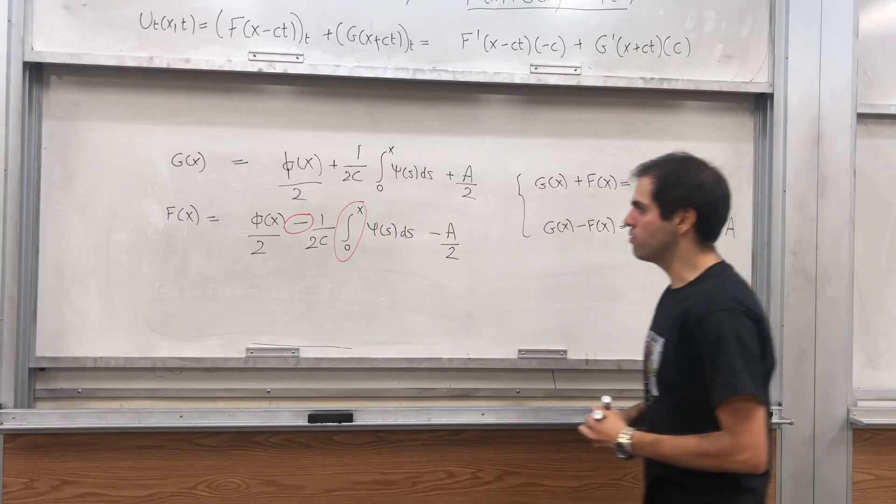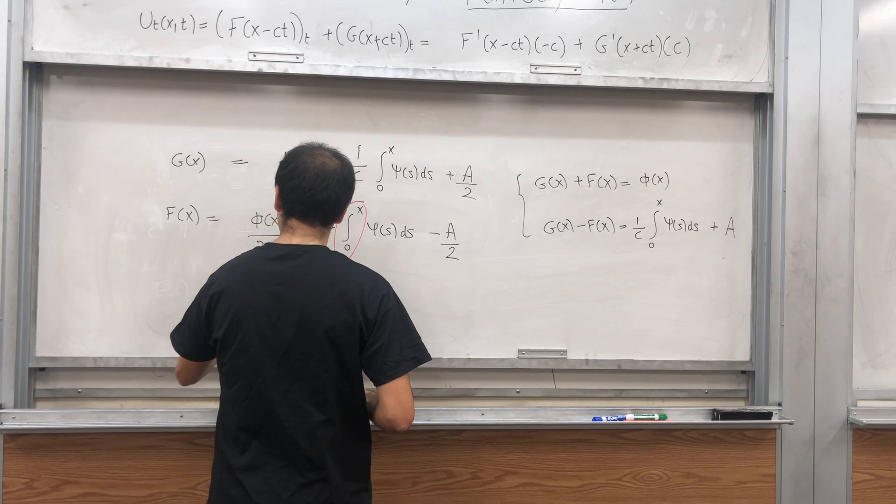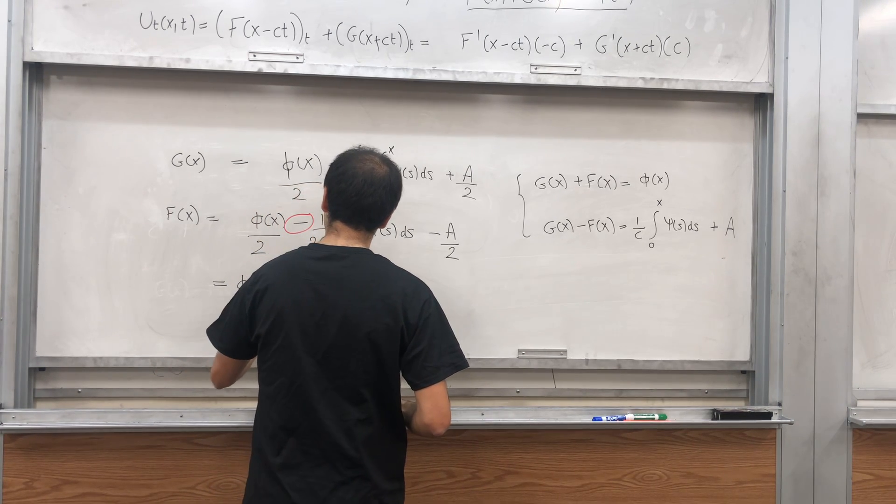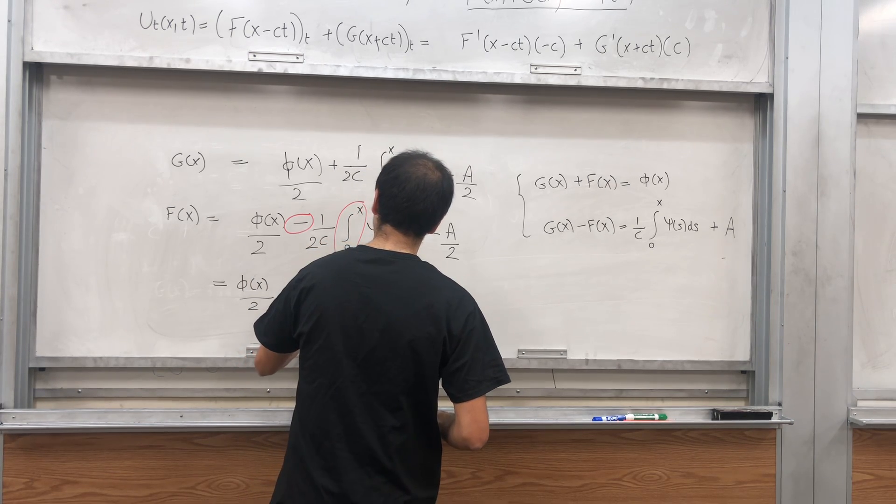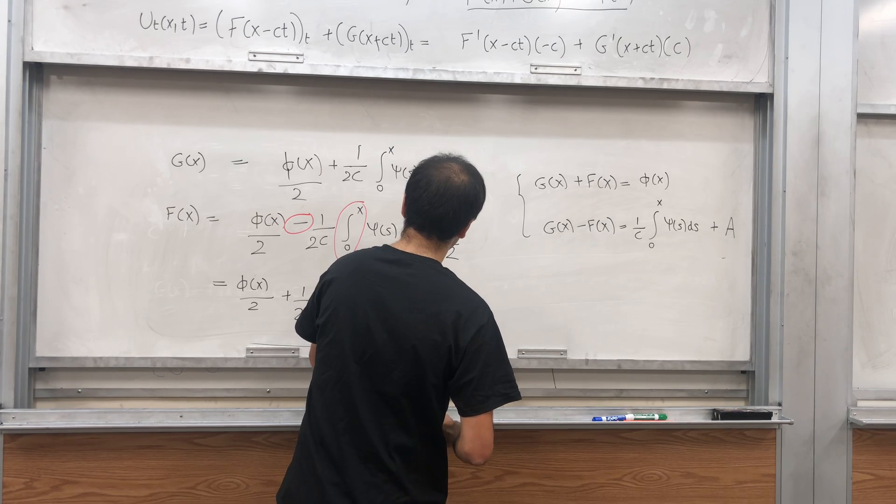But with the order reversed. So that is phi of x over two plus one over two C integral from x to zero psi of s ds minus A over two.